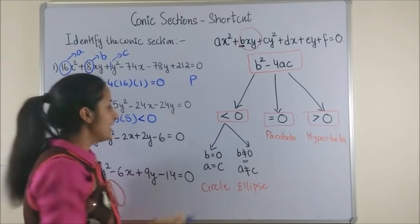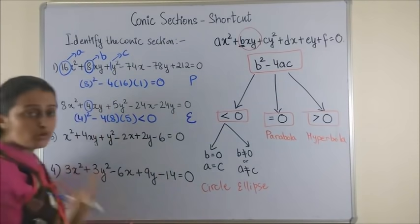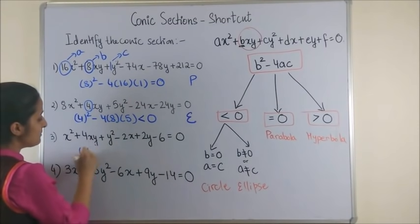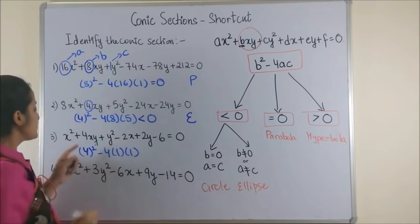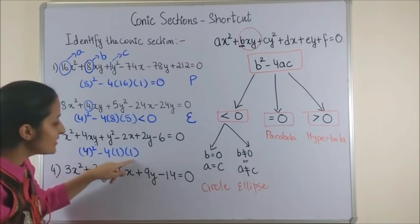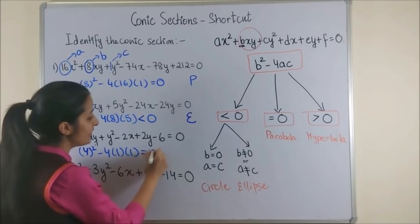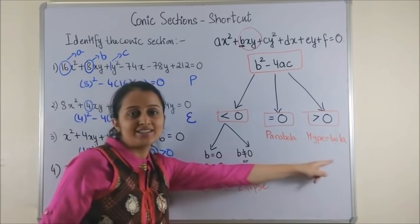Moving on, next one. This is b² - 4 into a into c, so this is 16 - 4, which gives us 12, which is greater than 0, and thus your answer has to be a hyperbola.